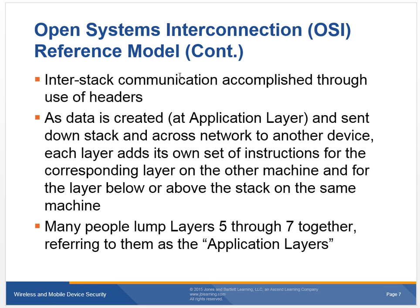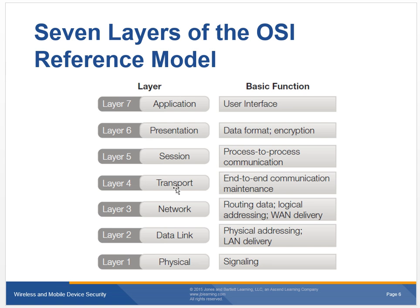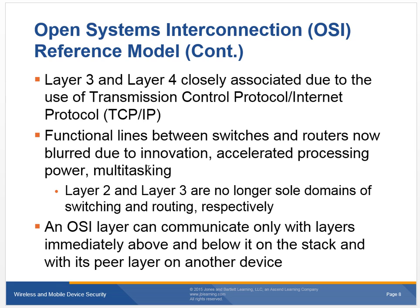Data is created at the application layer — that would be like your email program — and sent down the stack: application, then presentation. As we talked about, layers 5, 6, and 7 are actually linked together in the application layer now. Each layer adds its own set of instructions for the corresponding layer, adding a little bit more. Layers 3 and 4 are the transport and the network, closely associated due to the use of the TCP/IP protocol.